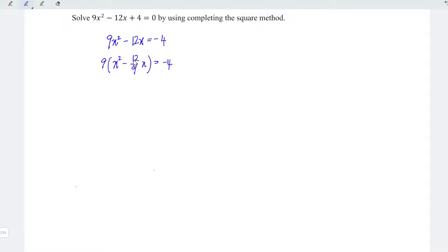Simplify this term if needed. So we have 9 times (x² - 4/3x) = -4.